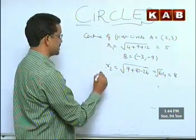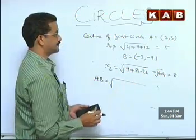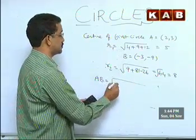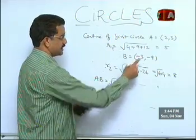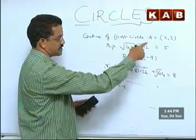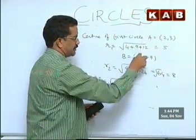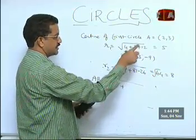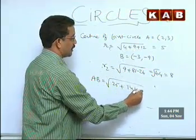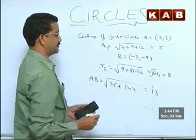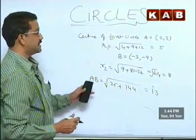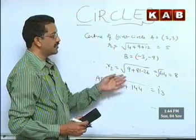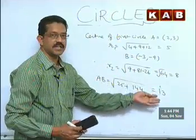Now I will find the distance between the centers. Using the distance formula, AB = √[(2−(−3))² + (3−(−9))²] = √[25 + 144] = √169 = 13. So AB = 13.